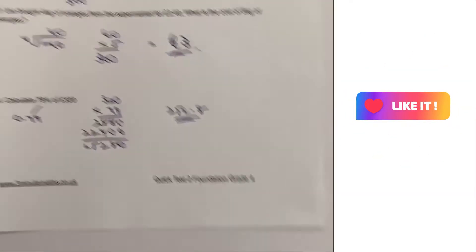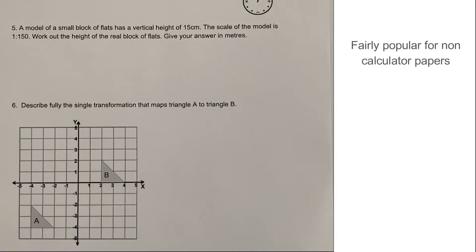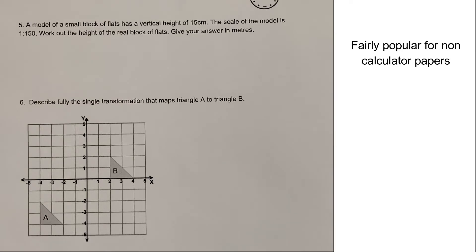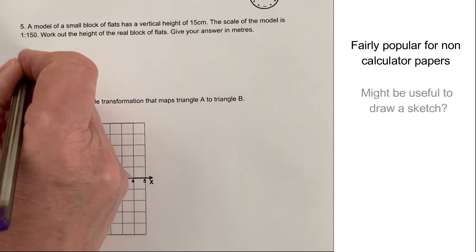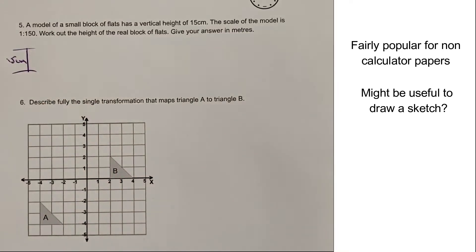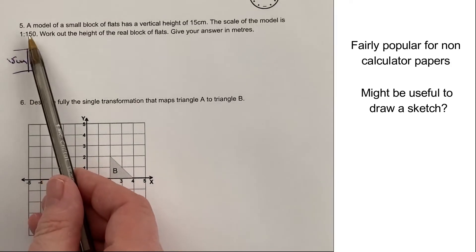So let's move on then to question number five. Question number five, we've got a scale. Very popular, actually, type questions with GCSE. Generally non-calculator, as is most of these questions. So a model of a small block of flats has a vertical height of 15. So what we're basically saying is that the model is 15 centimetres. And what's the actual value of the real block of flats? Well, essentially, for every one centimetre, we've got 150 centimetres in real life.